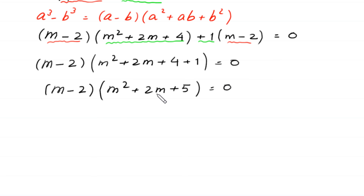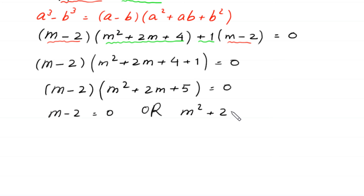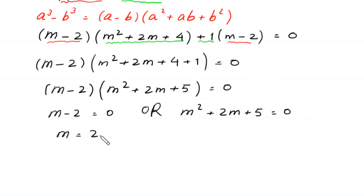Now, from here, either this expression m minus 2 is equal to 0, or this expression m squared plus 2m plus 5 is equal to 0. From m minus 2 equals 0, m is equal to 2. This is the first value of m.